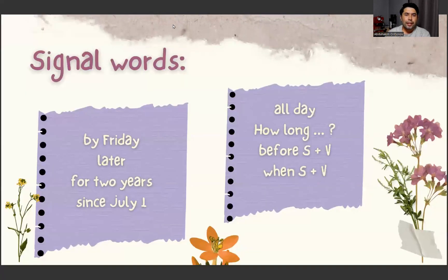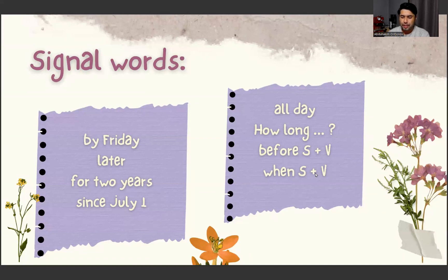Here are some signal words: by Friday, later, for two years, since July 1st, all day, how long, before subject plus verb, and when subject plus verb. Let's see some examples.